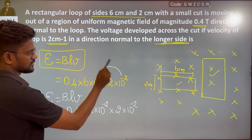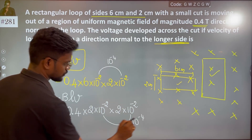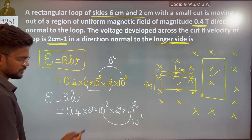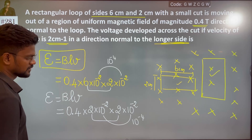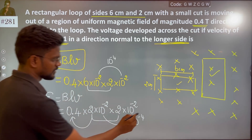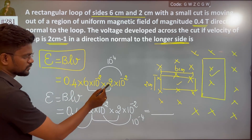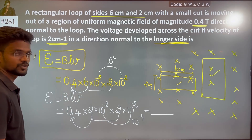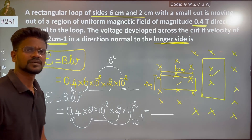This gives 10 to the power minus 4. Let's calculate: 2 × 2 = 4, and 4 × 0.4 gives us 12 × 4 = 48, so the result is 4.8 × 10⁻⁴ volts.